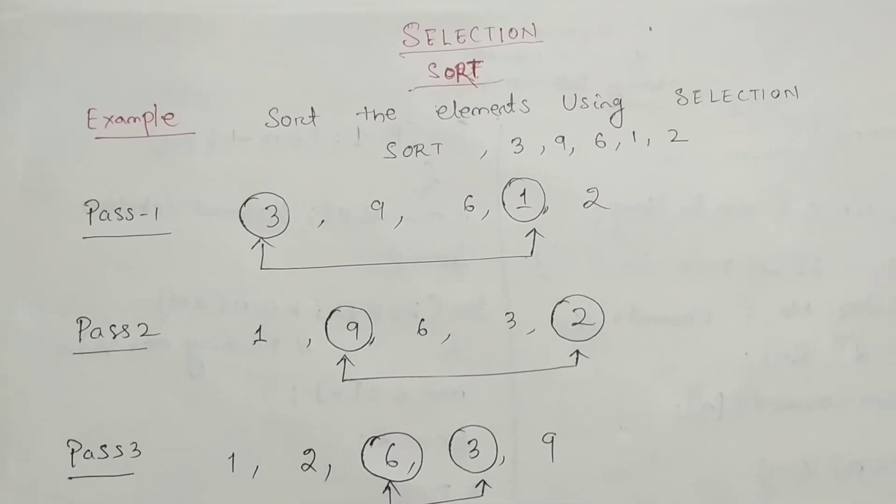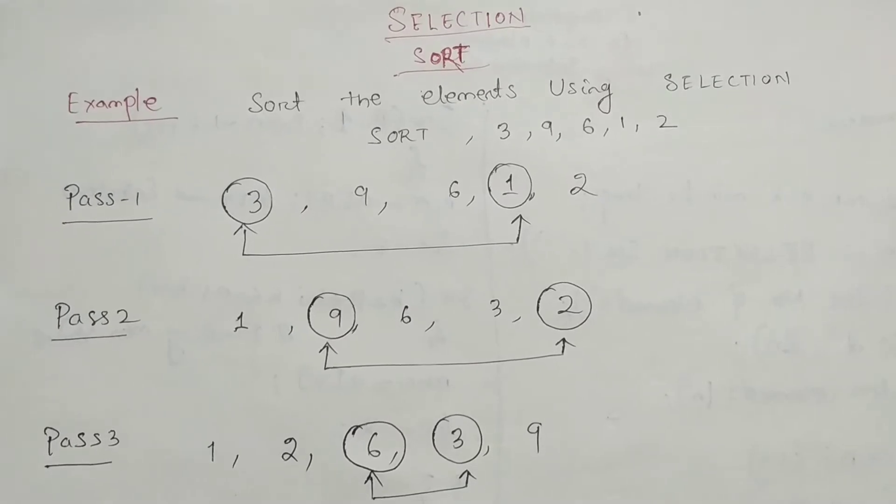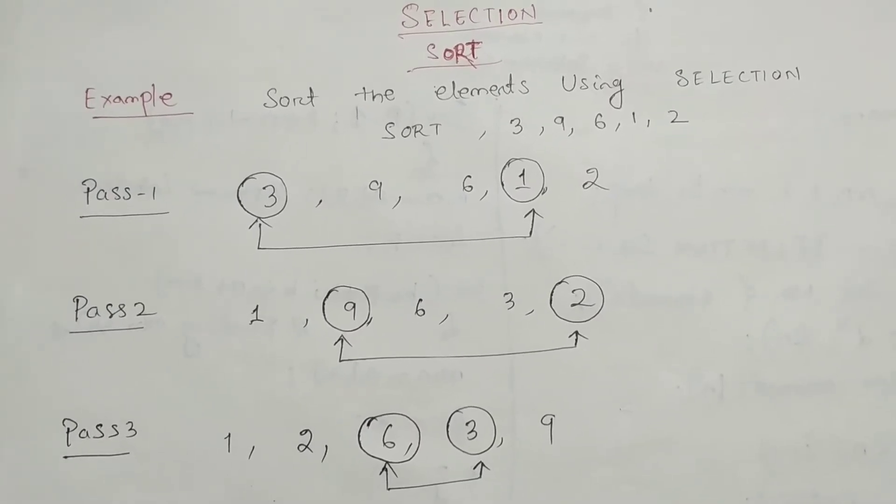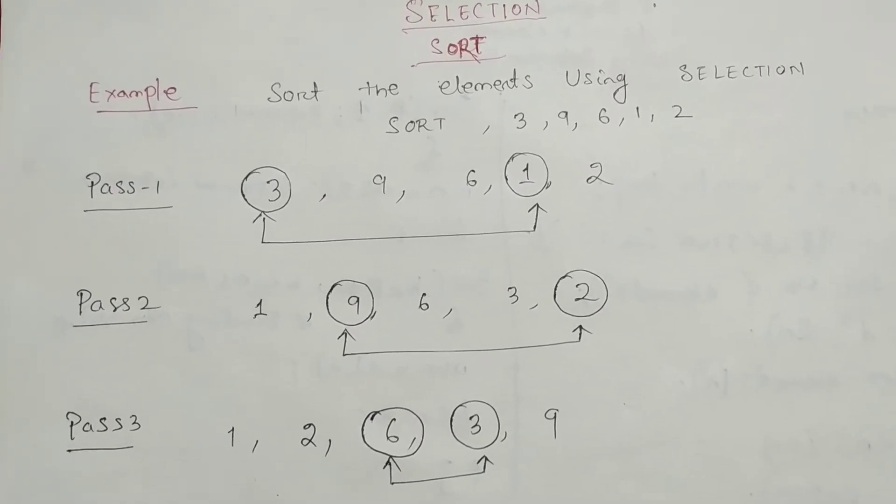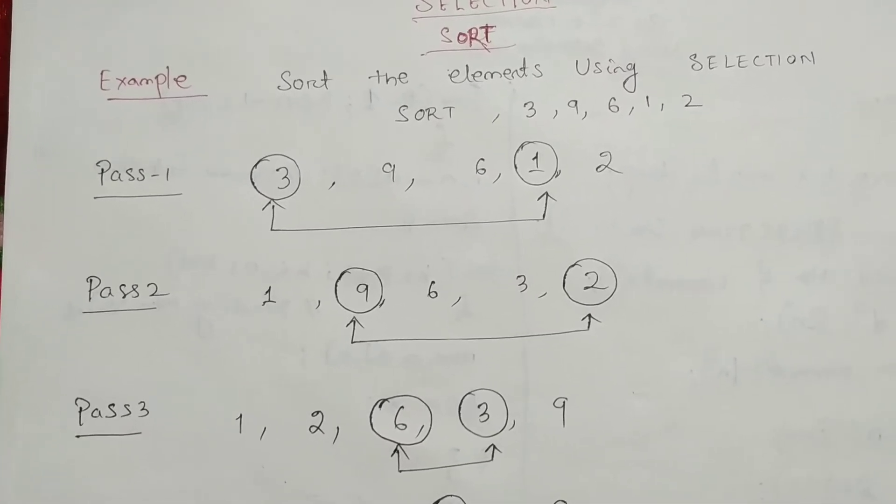Namaskar everyone, today we will study selection sort. Selection sort is used to sort the elements in ascending order. Here we have to find the minimum value present in the list and we have to replace or swap that element to its proper position.